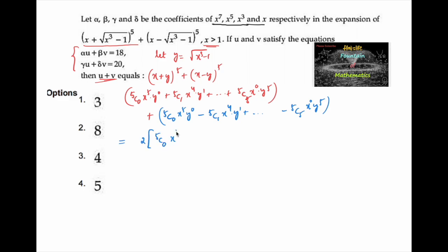Adding both expansions gives 2 times (⁵C₀x⁵ + ⁵C₂x³y² + ⁵C₄xy⁴). We can observe that only even powers of y remain in all three terms: y⁰, y², and y⁴.